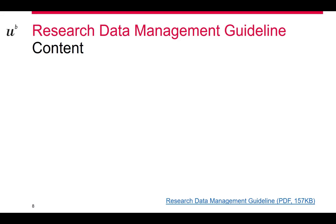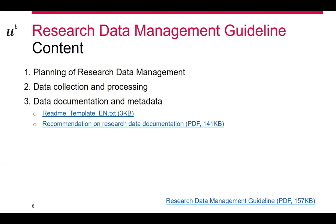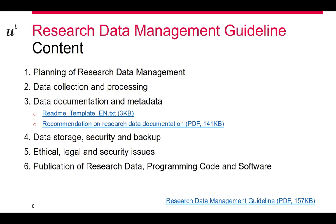The guide is general enough for people to start answering their questions. The content is separated by chapters: the first focuses on planning for research data management; then data collection and processing, following the life cycle; then details about data documentation and metadata — with clickable README files available; then data storage, security and backup; ethical, legal and security issues; and finally publication of research data and code. But the most interesting part for a new reader is the seventh part: the annexes.